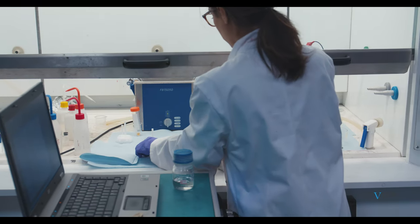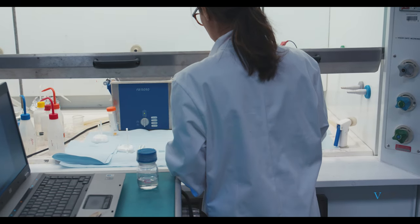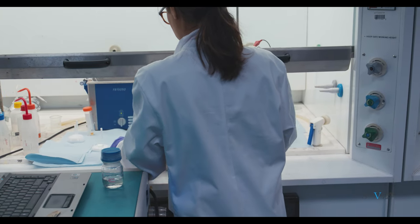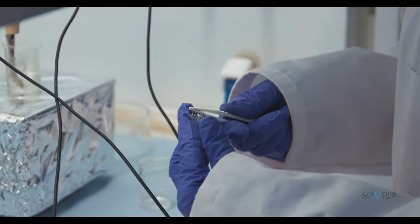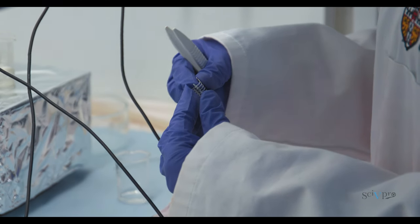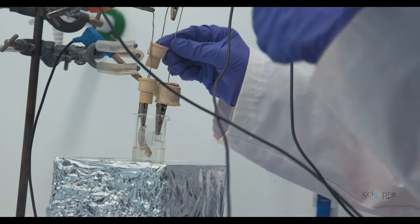We deposited PDOT through electropolymerization. After cleaning the silver and platinum electrodes, place them back to the previous configuration in a clean beaker. Connect the other side of the ITO substrate to a new electrical connection leg.